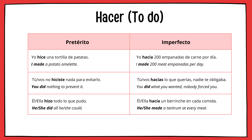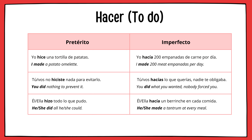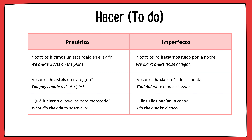Nosotros jugamos a las escondidas. Vosotros jugasteis esa noche. Ellos jugaron como profesionales. Nosotros jugábamos al Age of Empires. Vosotros jugabais al Counter-Strike. Ellos jugaban a escondidas de los adultos. Next is the verb hacer: Yo hice una tortilla de patata. Tú no hiciste nada para evitarlo. Él hizo todo lo que pudo. Yo hacía 200 empanadas de carne por día. Tú hacías lo que querías — nadie te obligaba. Él hacía un berrinche en cada comida.